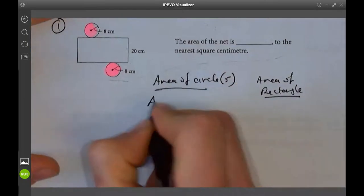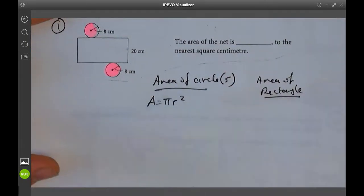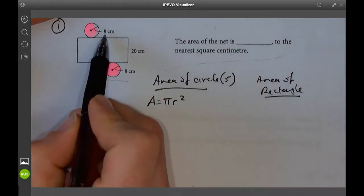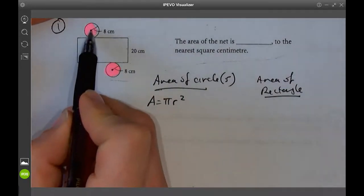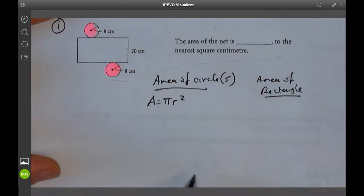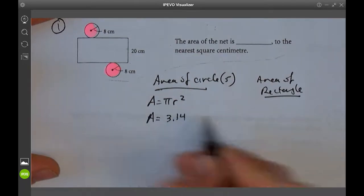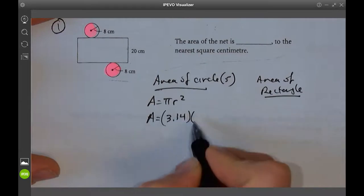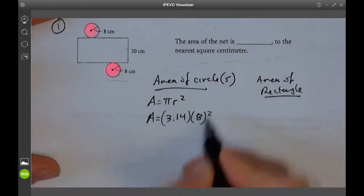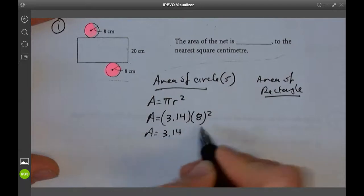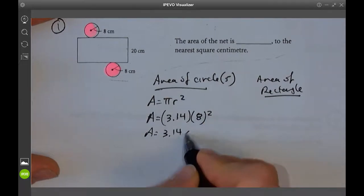Pi r squared. So what is r? Radius is just from the middle to the outside, so it gives you r. So r is 8. So pi is 3.14. I'm going to multiply by the radius squared. What's radius squared? 8 times 8. That's what that is. 64.